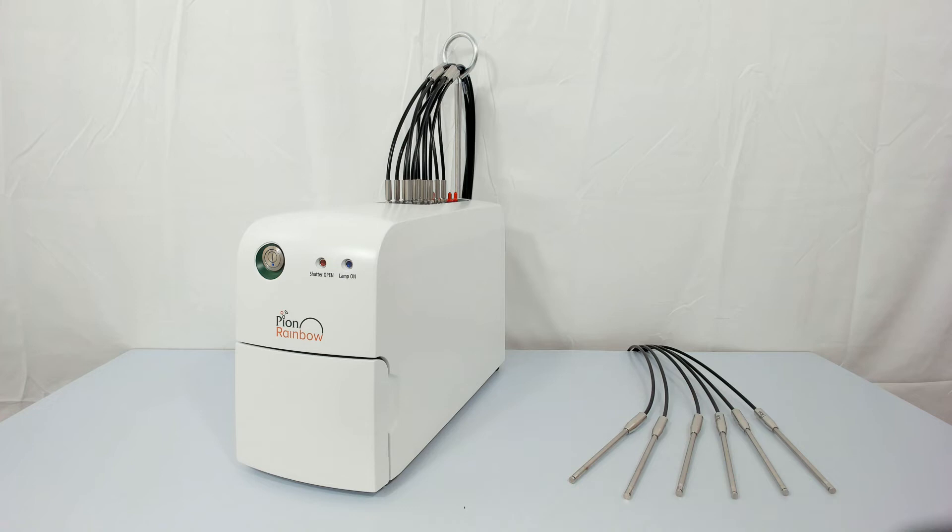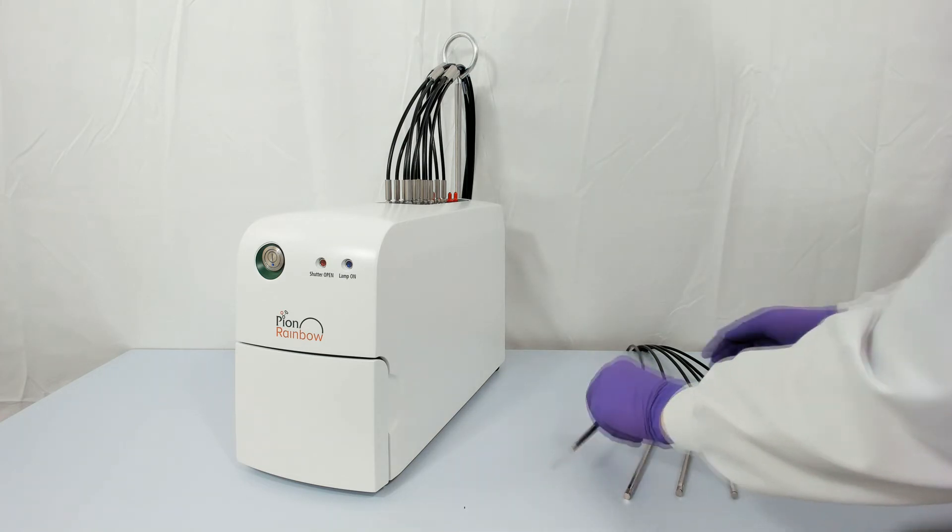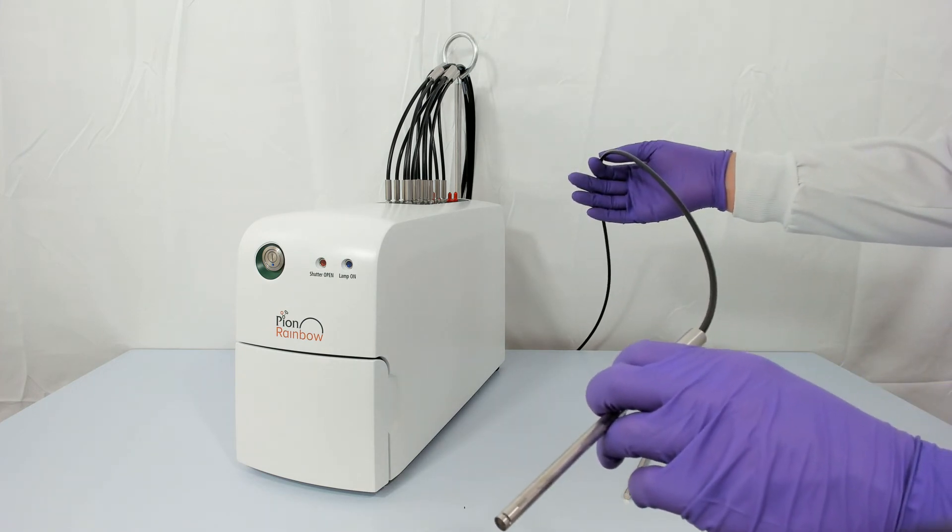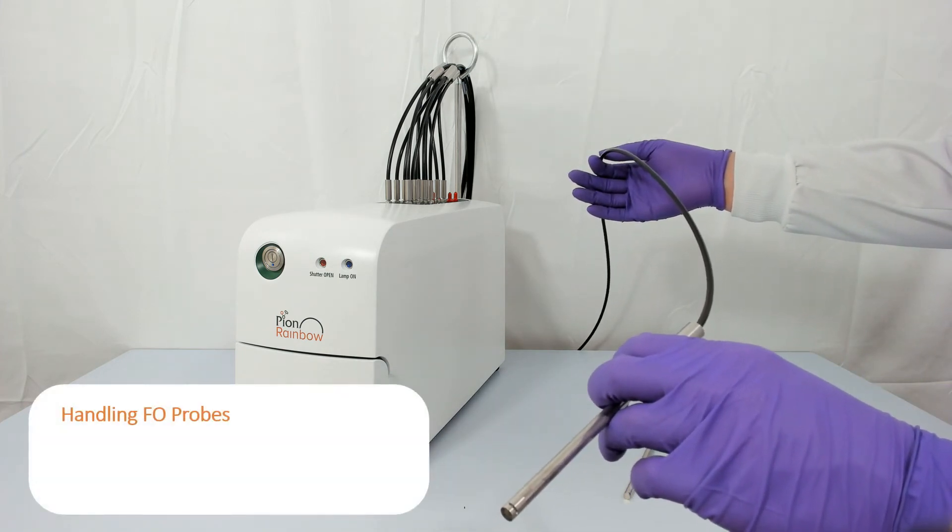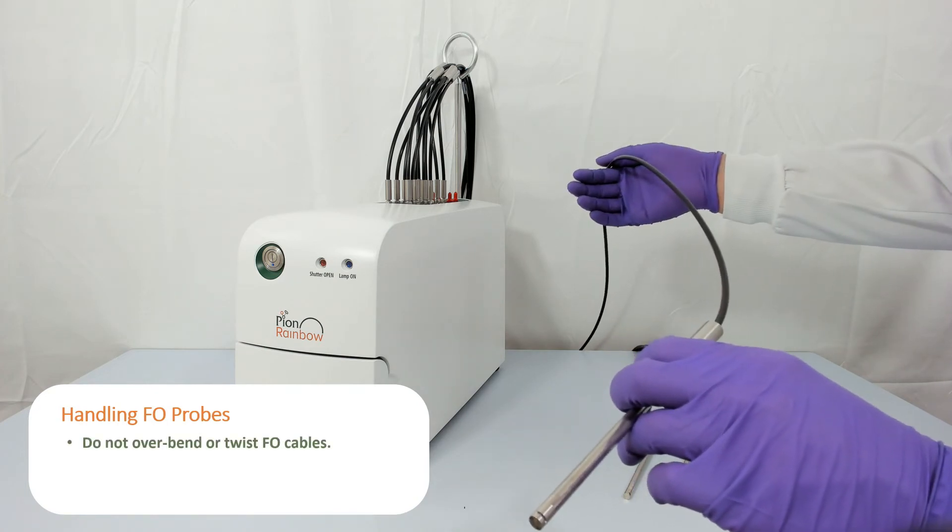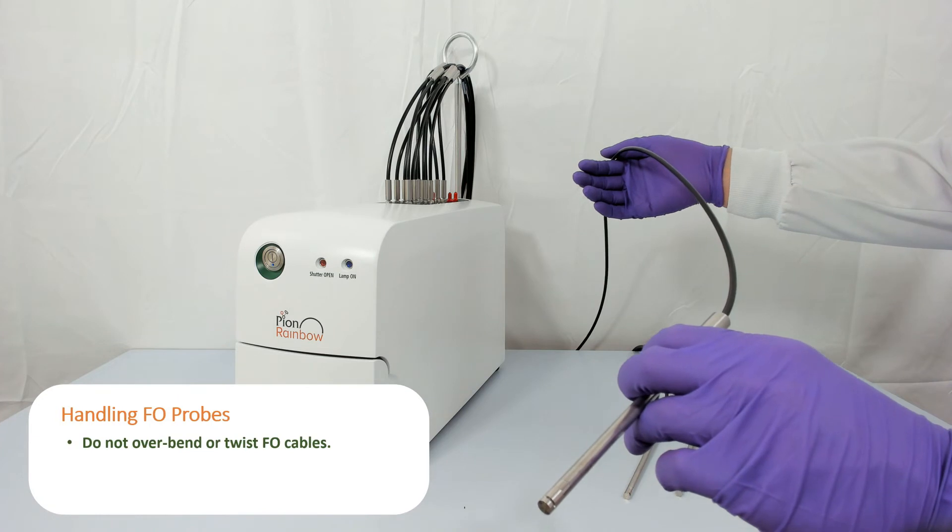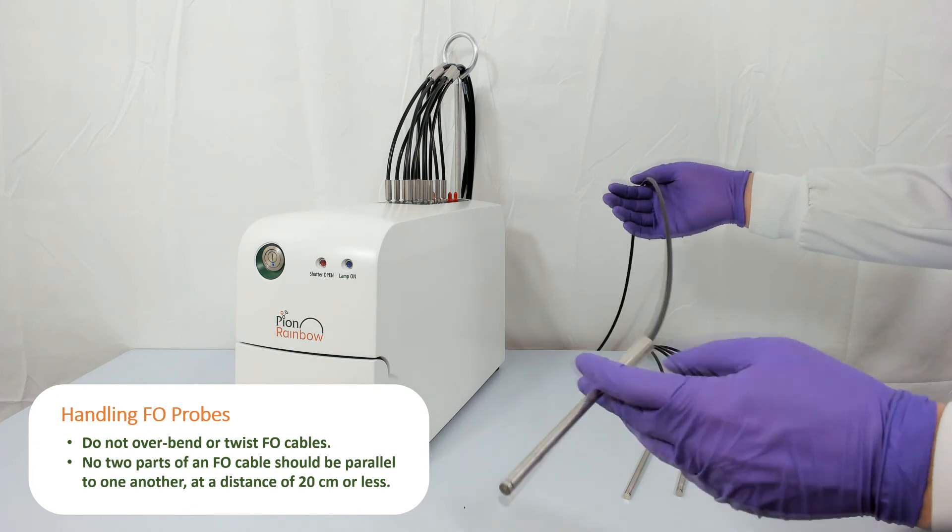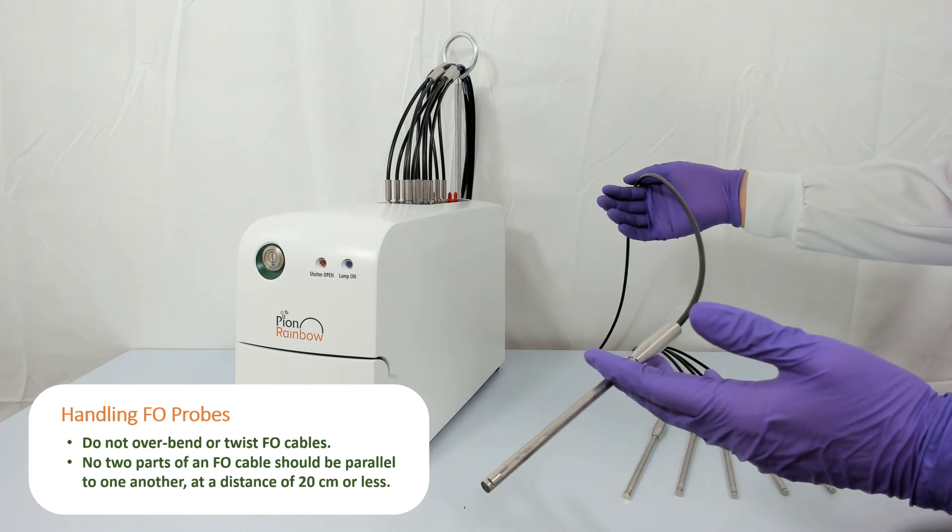Now, some important notes on care for the fiber optic probes. The cables themselves are reasonably durable, but possess a minimum bend radius of 20 cm, meaning that no two parts of the cable should ever be parallel to one another at a distance of 20 cm or less. Bends greater than this risk damaging the fiber optics.